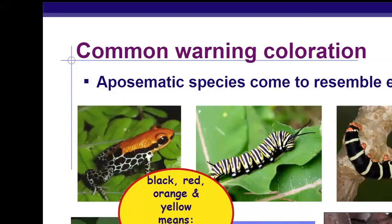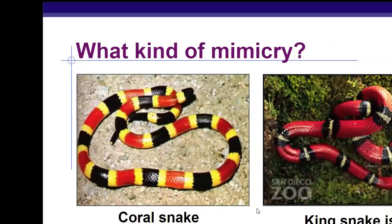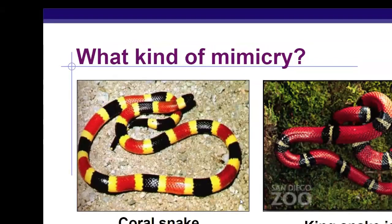Here are other examples of aposematic, or warning signs. Just these color patterns will keep organisms away, because through time they've recognized that red, orange, and yellow mean it's harmful, so don't eat them. The coral snake is poisonous, but the king snake is not. So is this Batesian mimicry or Müllerian mimicry? Batesian — only one is harmful. Müllerian — they're both harmful.